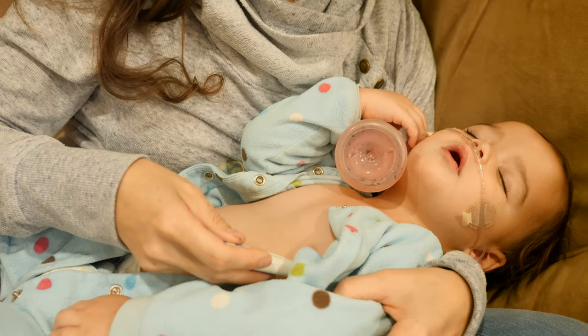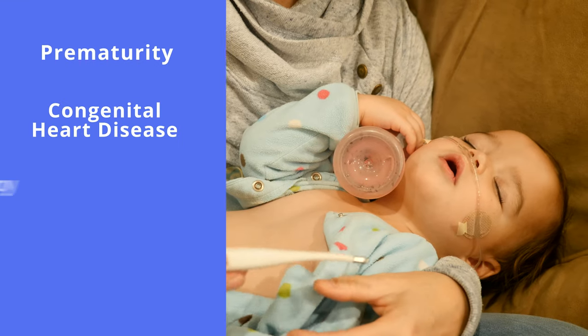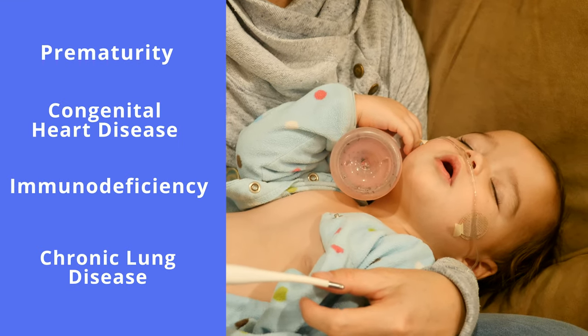Due to the significant burden of disease and the fact that it can cause asthma-type symptoms, two important prevention strategies and therapeutics have been studied and created: monoclonal antibodies and vaccines. Monoclonal antibodies bind the fusion protein and are given to infants with risk factors for severe disease — prematurity, congenital heart disease, immunodeficiency, and chronic lung disease — to prevent disease. In adults, we don't have this.